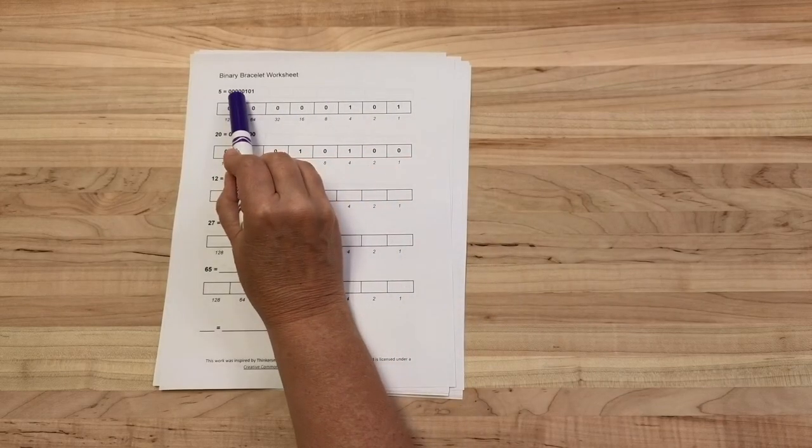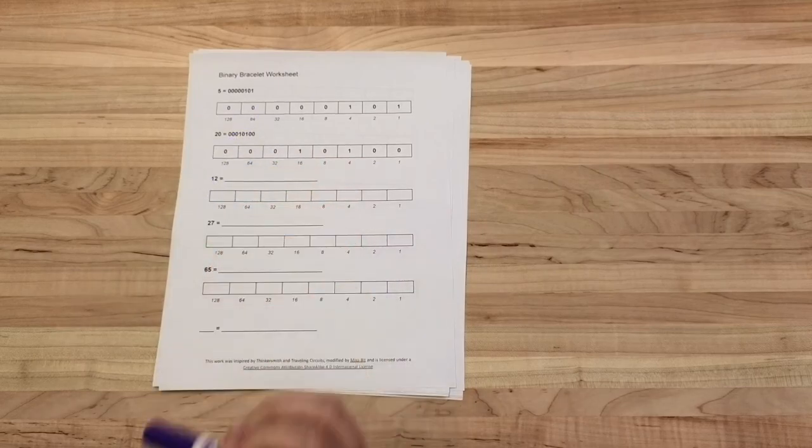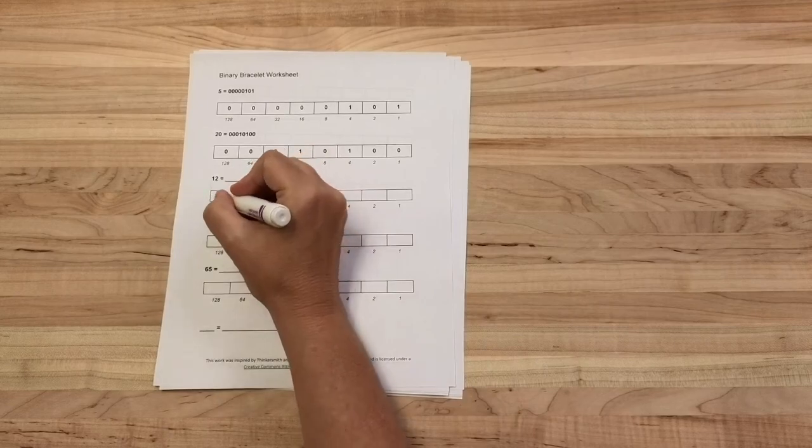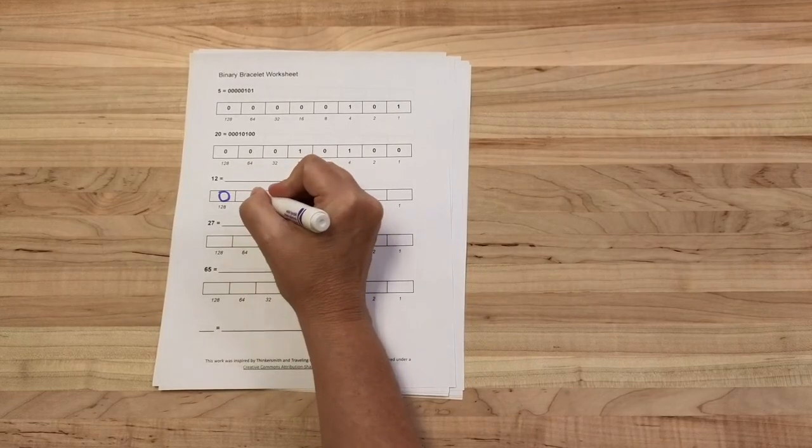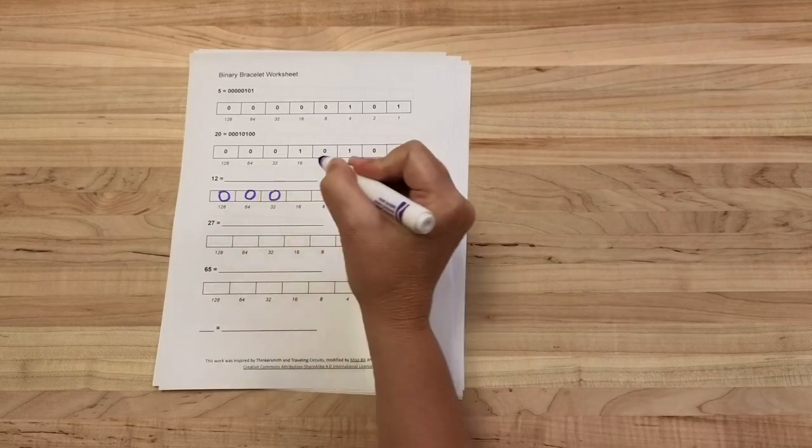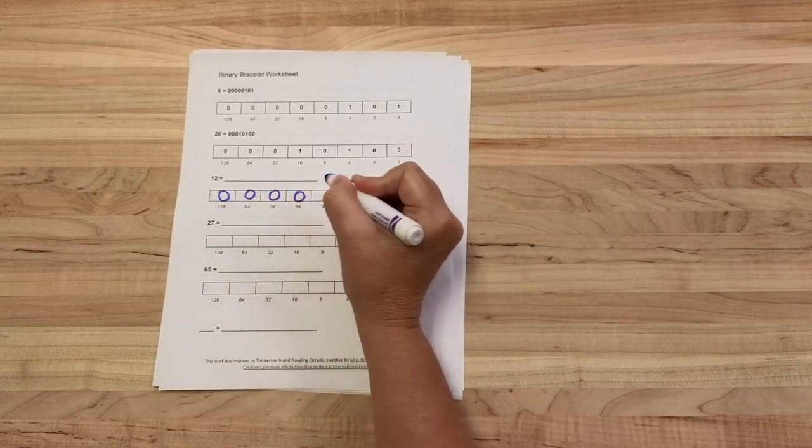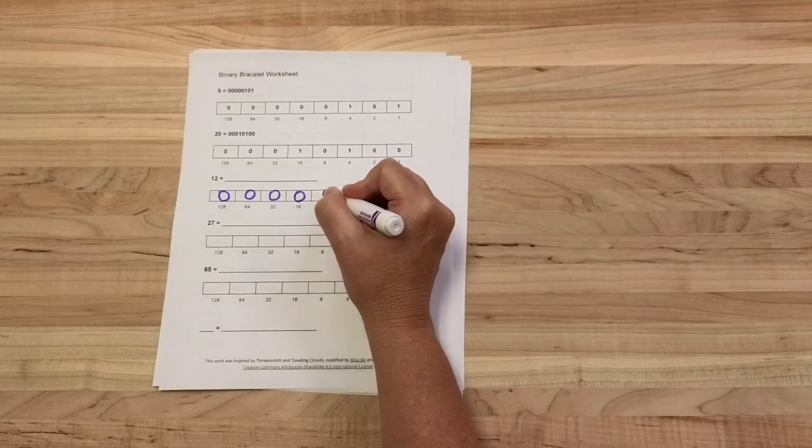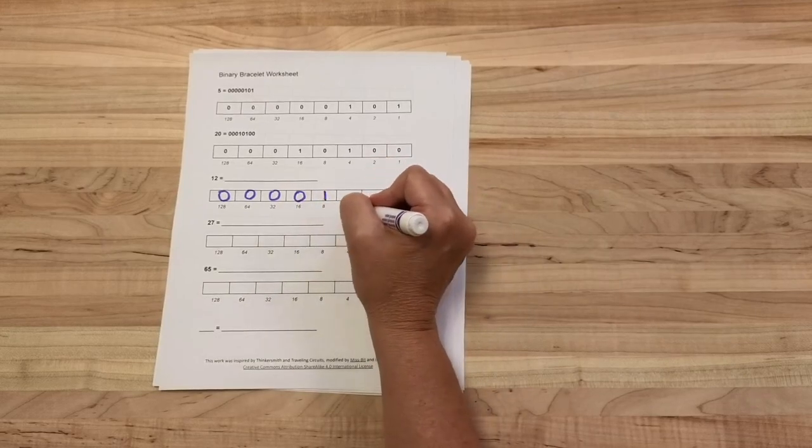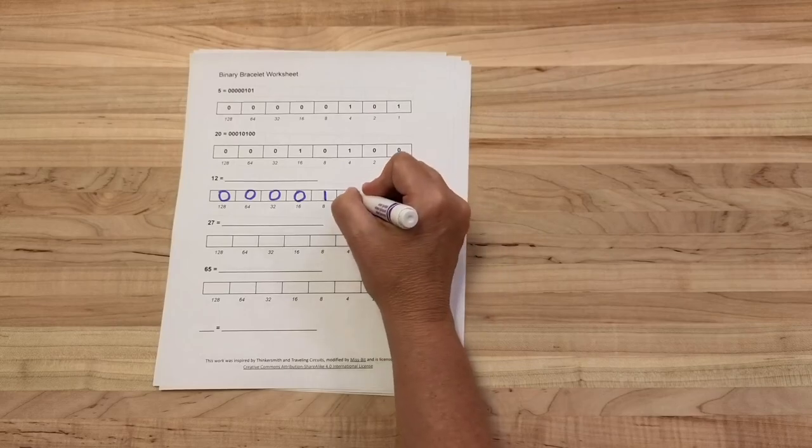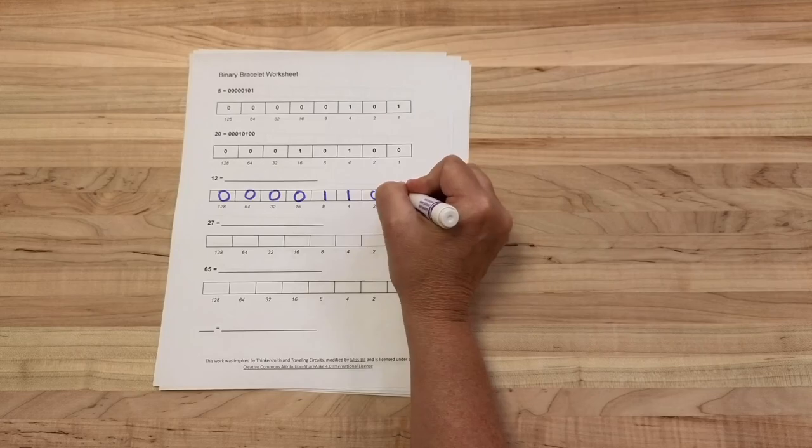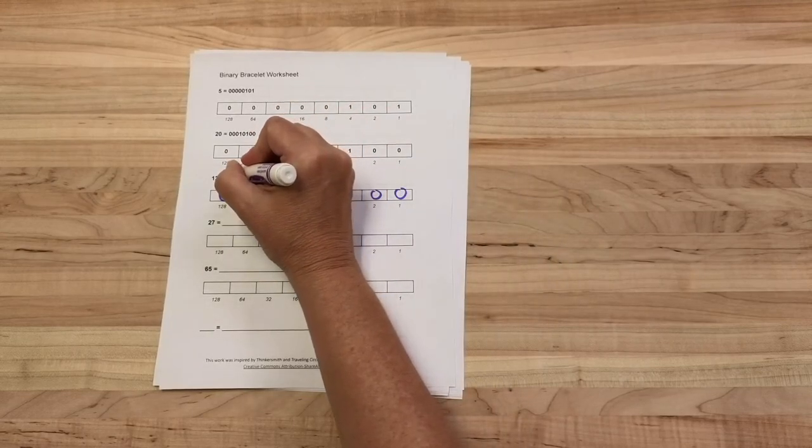So let's try it ourselves with the number 12. Again, 12 is less than 128, turn that off. Less than 64, turn that off. Less than 32, turn that off. Less than 16, turn that off. Oh, now it's greater than 8, I need the 8, so I'm going to turn that on. And 8 plus 4, oh that's 12, I can turn that on. Now that I have my number, I know I can turn these last two off because I do not need them. So 12 in binary is 00001100.